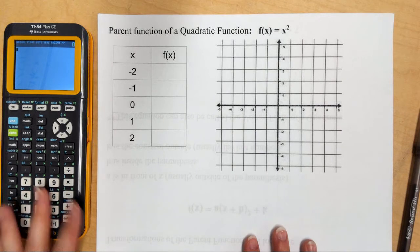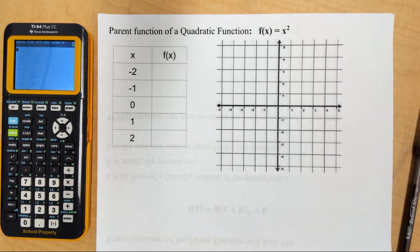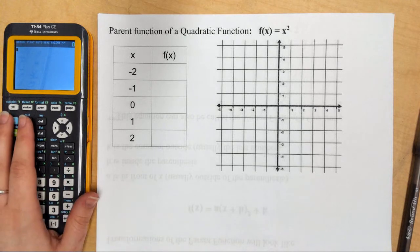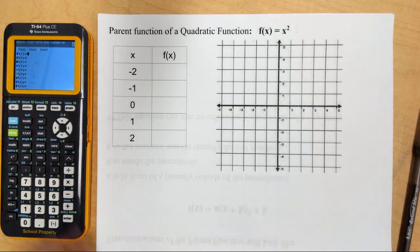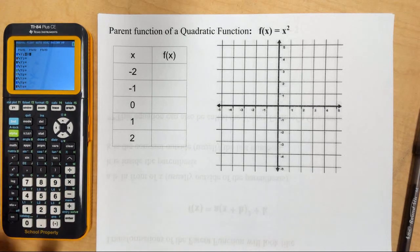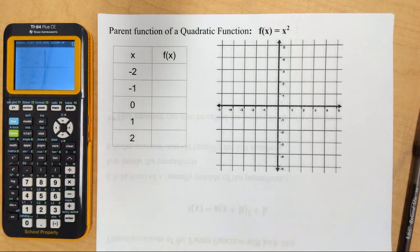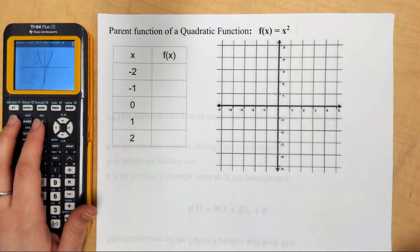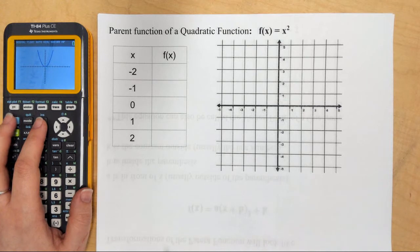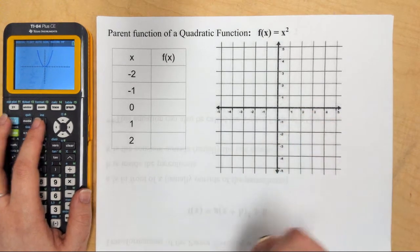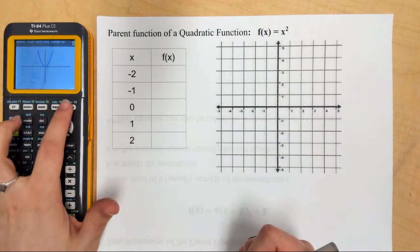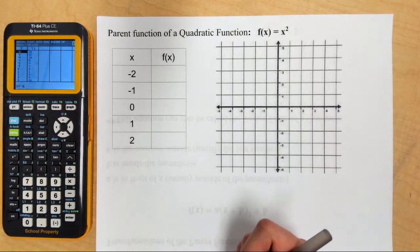If you don't have a calculator, pause the video, go grab a calculator, and come back. We're going to graph it. I'm going to go to y equals, type in x squared, and then click graph. It pops up — here is my quadratic function, my parent function. In order to fill out this table, I'm going to press second table so it can help me.